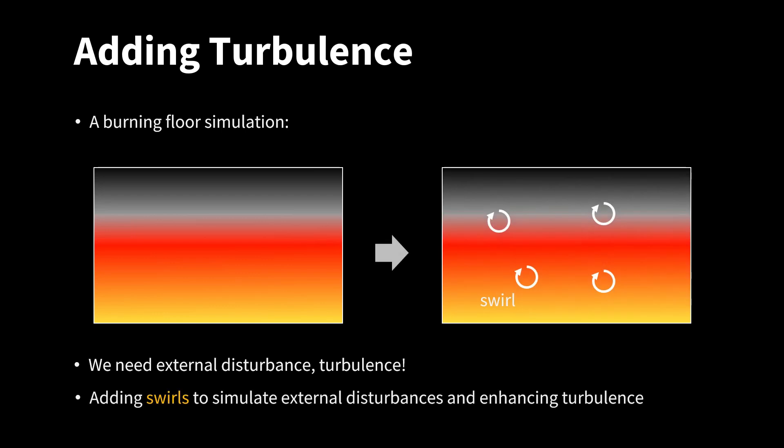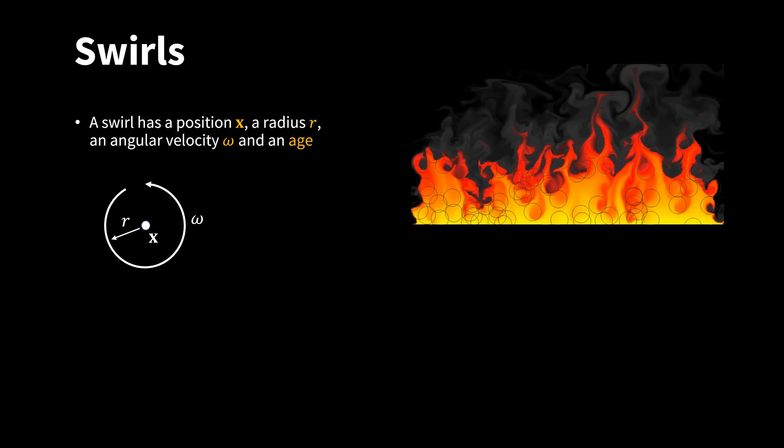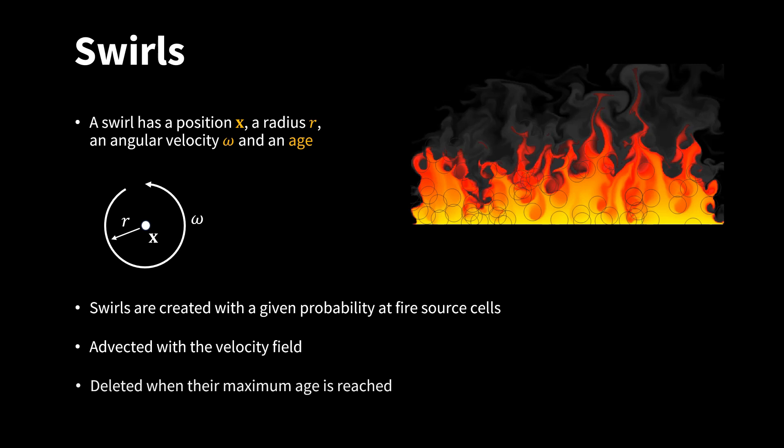We do this by introducing swirls. A swirl has a position x, a radius r, an angular velocity omega and an h. Swirls are created with a given probability at fire source cells. Then they are advected using the velocity field in the grid. When they reach their maximum h, they are deleted.